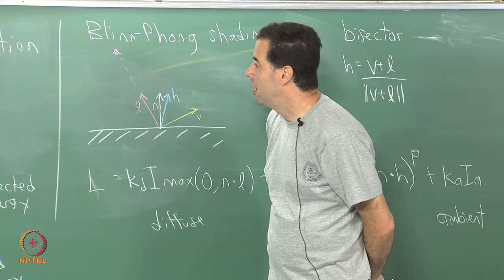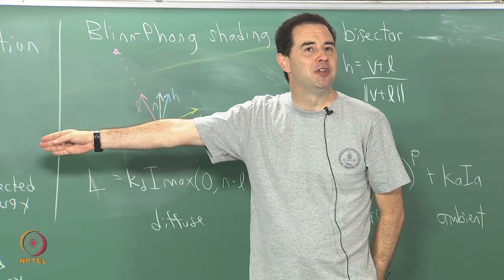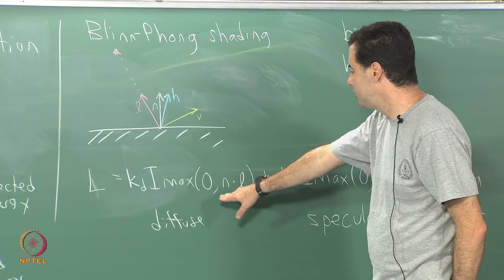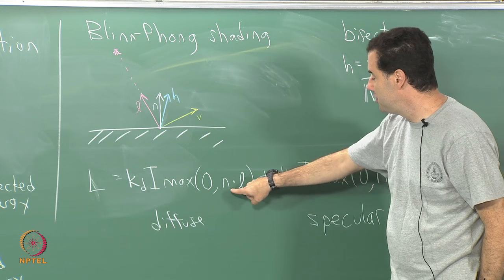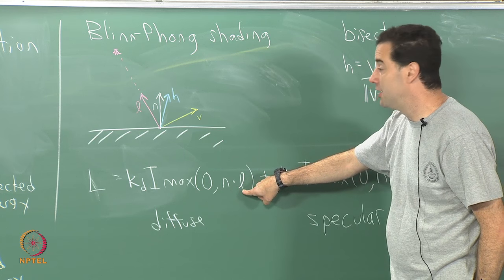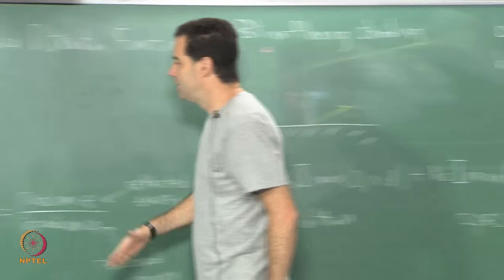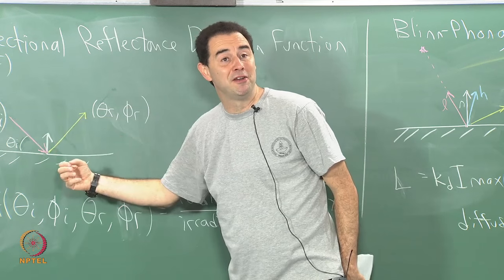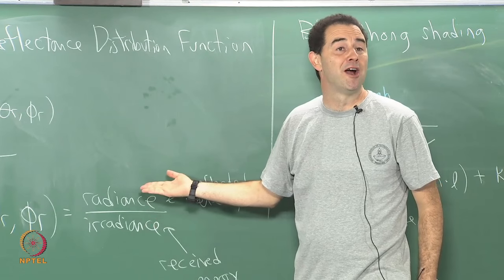In the case of a Lambertian model, the BRDF is constant. So the only part that is really left — this still depends on the angle that the light source makes with respect to the surface. But as I said, that will decrease the amount of energy coming in, and this ratio is based on comparing the amount coming in to the amount going out.